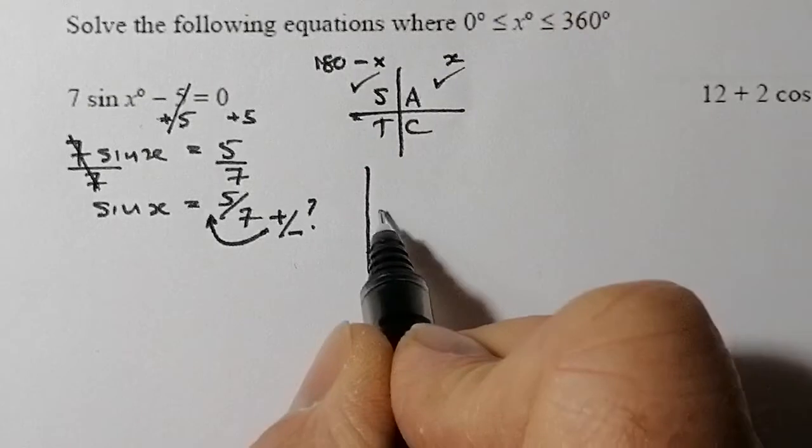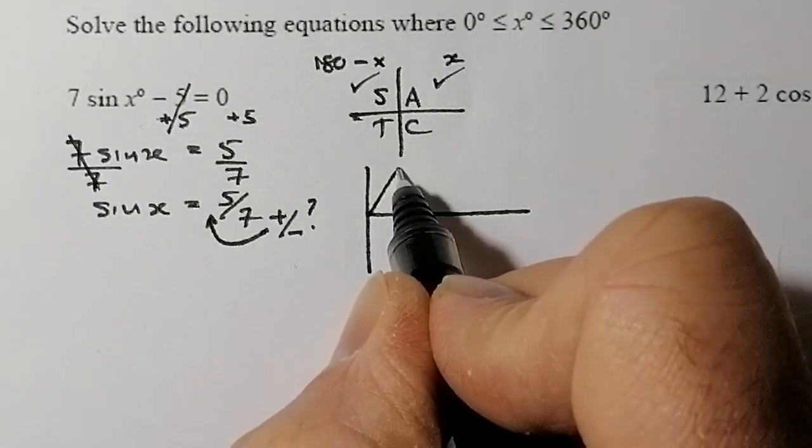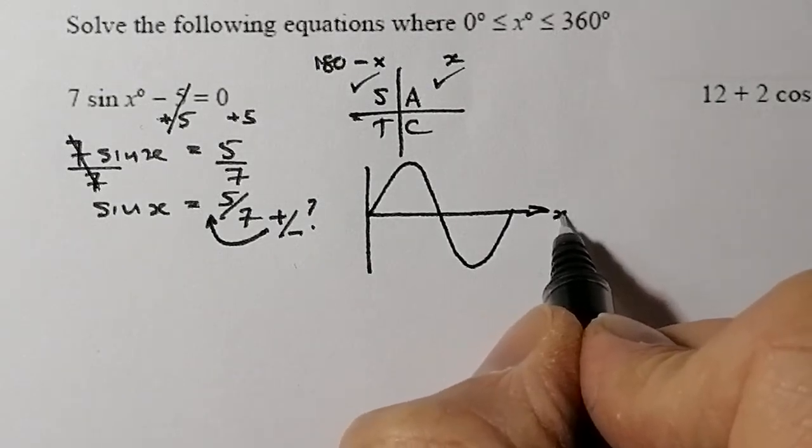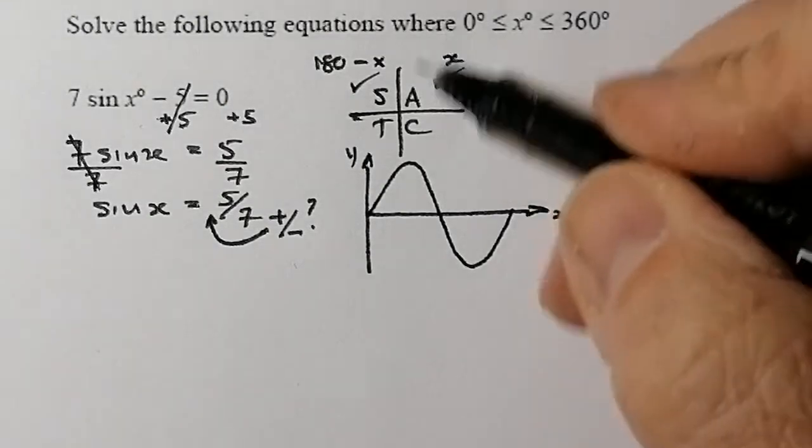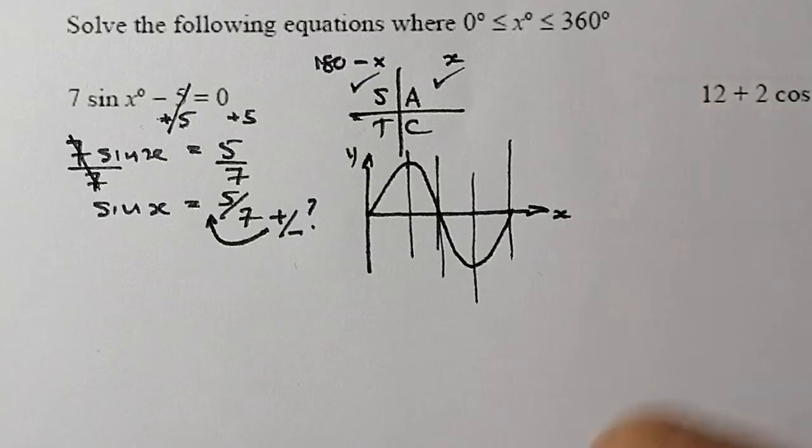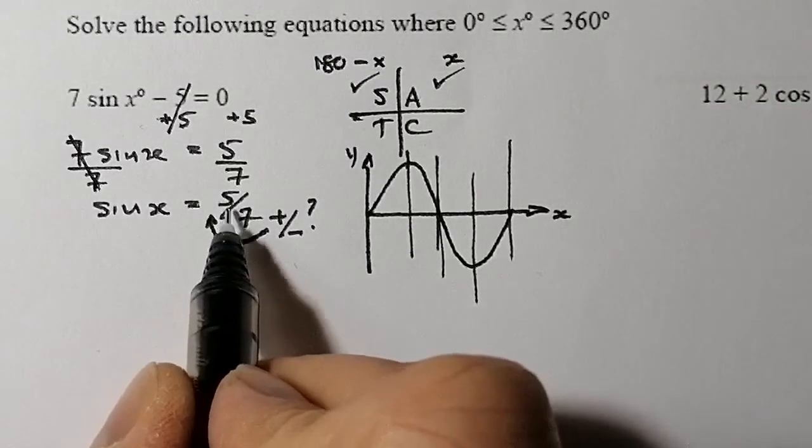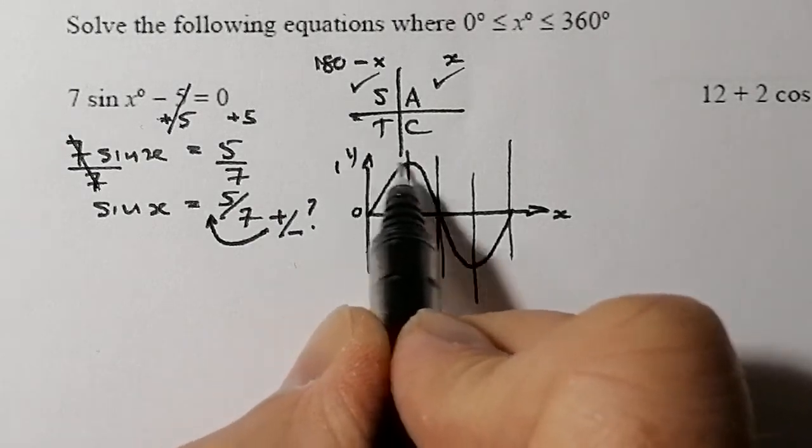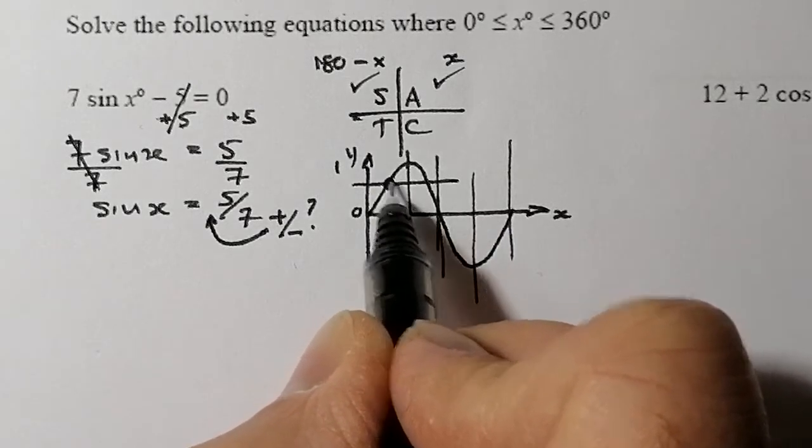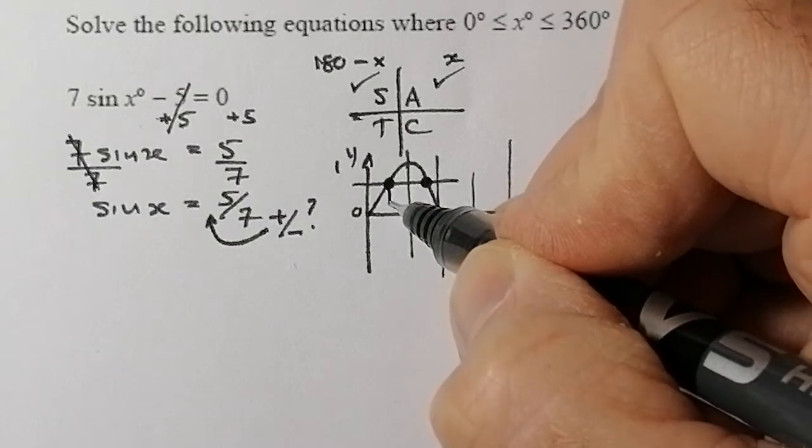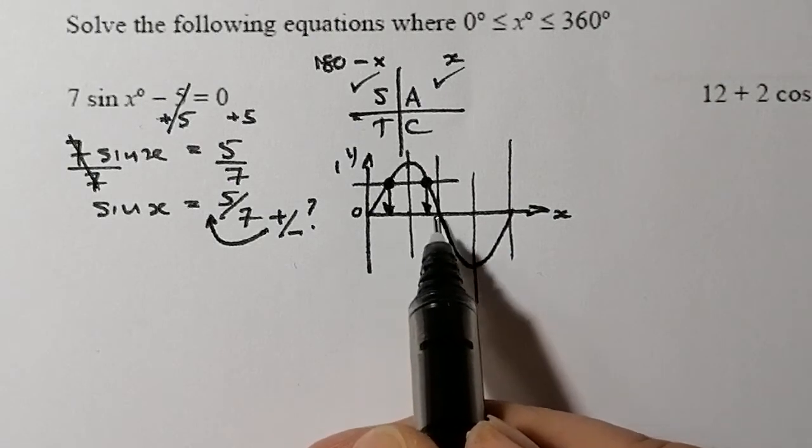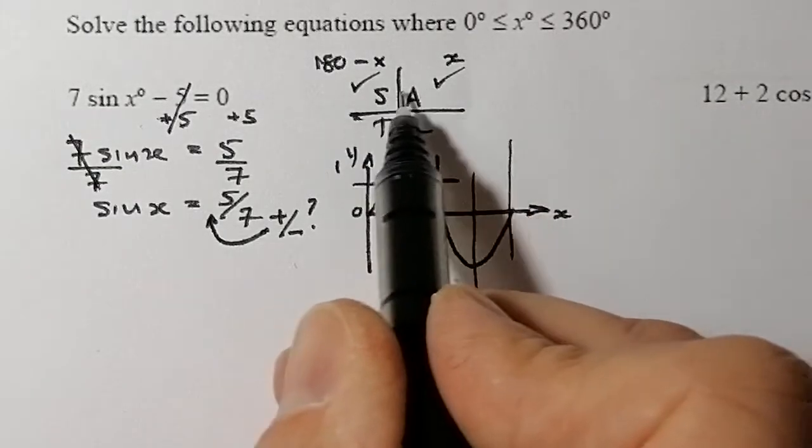You can also imagine this as the sine graph. The sine graph generally goes up, comes down through 180, bottoms out at negative 1. If I split this into four quadrants, that would be my first quadrant, second quadrant, third quadrant, and fourth quadrant. If I know it's positive 5/7, that's maybe just a bit more than a half. I'm looking for two answers, one answer less than 90 degrees, one answer between 90 and 180 degrees.